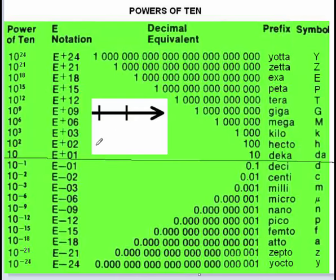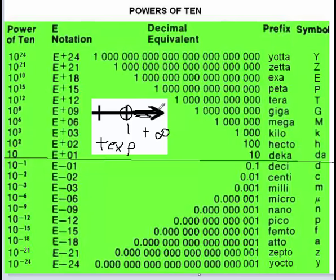We could say that positive exponentials produce numbers that are between 1 and positive infinity — in other words, big numbers. We could emphasize this by highlighting the number line between 1 and positive infinity. So that's for positive exponents.